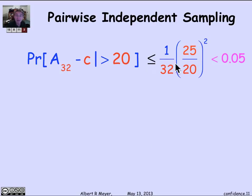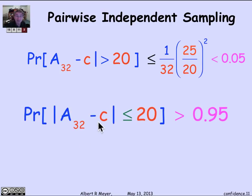When I do that, the probability that my average minus C was greater than 20—that my A_32, which was 180, was more than 20 away from the truth—is less than 0.05. Or flipping it around, the probability that my average is within 20 of the truth is greater than 0.95.